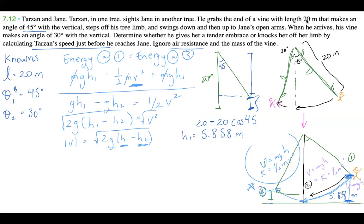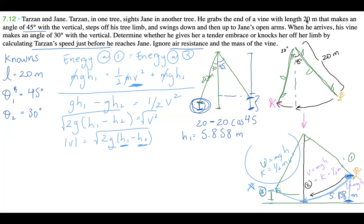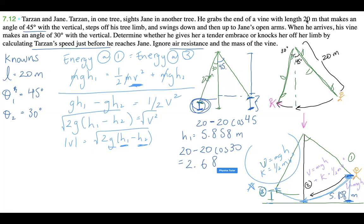For h₂, the same method applies. We again have a 20-meter vine, but this time at 30 degrees from the vertical. So h₂ = 20 − 20·cos(30°), which gives us 2.68 meters. That's h₂.